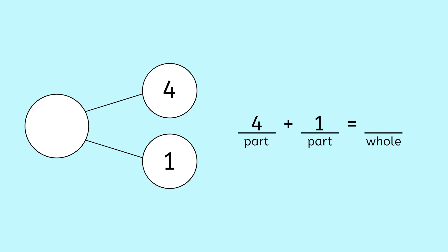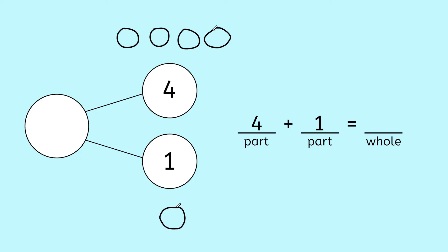Let's draw a quick picture to find the answer. I have one, two, three, four in this part, and only one in this part. Now, let's count them all together to find the answer: one, two, three, four, five. Four plus one equals five.